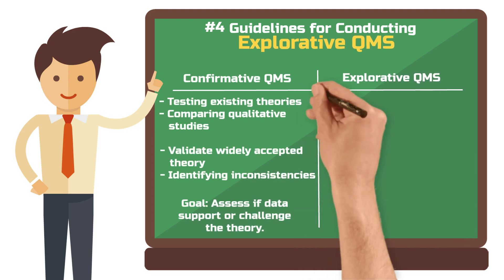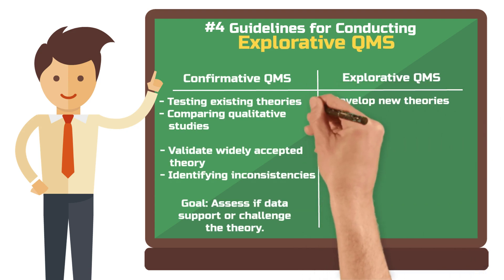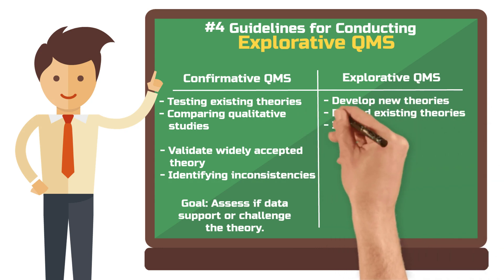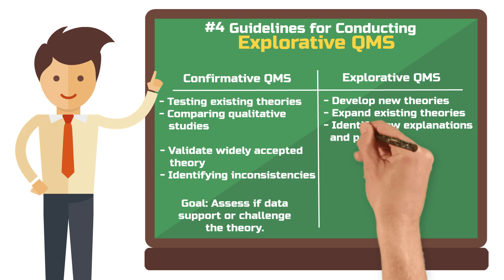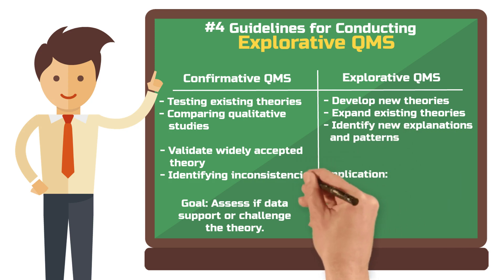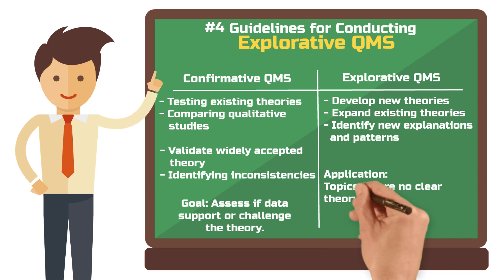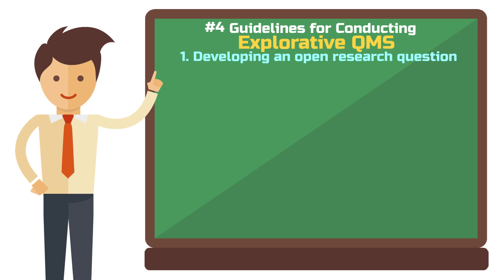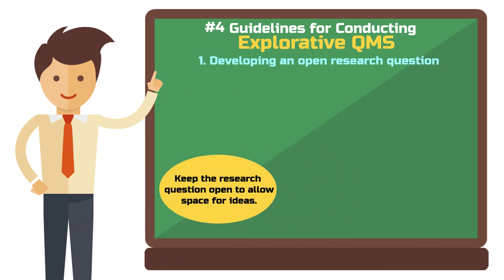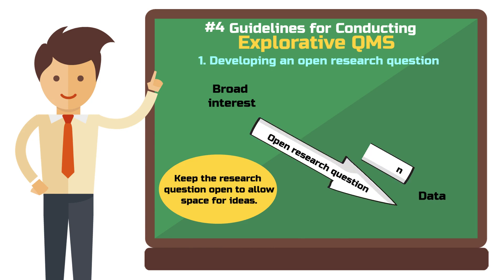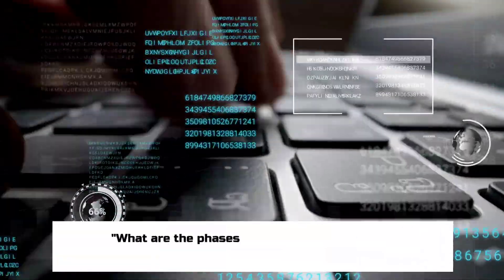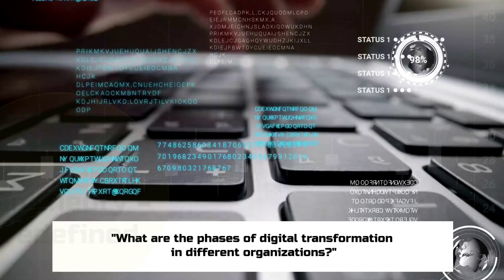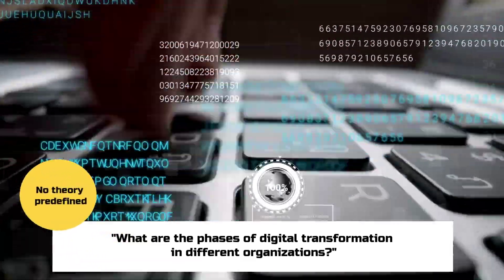Exploratory qualitative meta-studies focus on developing new theories or expanding existing ones. The goal is to explore studies for fresh patterns or explanations that might have been overlooked. This method is especially helpful when there are no clear existing theories on the topic. First step: keep the research question broad to allow for new ideas and theories to emerge, and refine the question as patterns or insights from the data guide you. For example, you could investigate the phases of digital transformation across organizations without relying on a predefined theoretical framework.